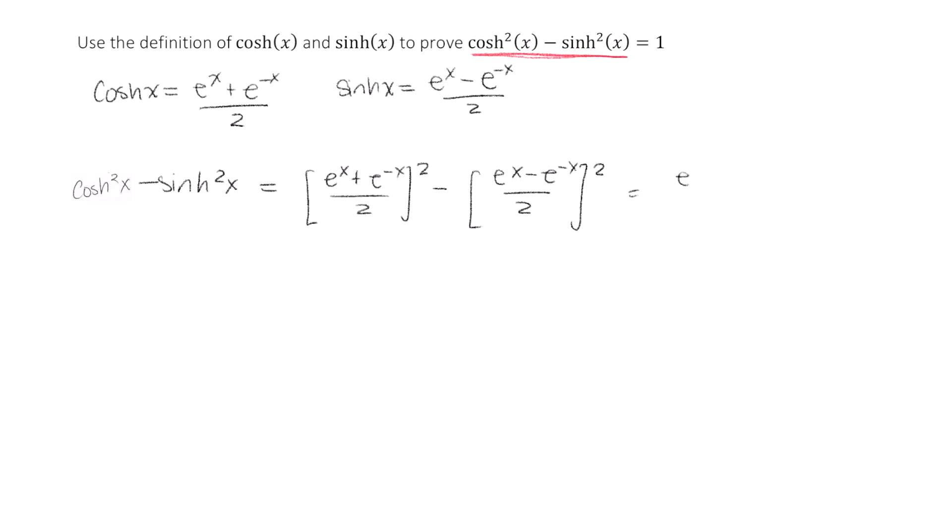This equals e to the x plus e to the negative x quantity squared in this numerator divided by 2 squared, minus e to the x minus e to the negative x divided by 2. And of course, the numerator and denominator are also squared here.